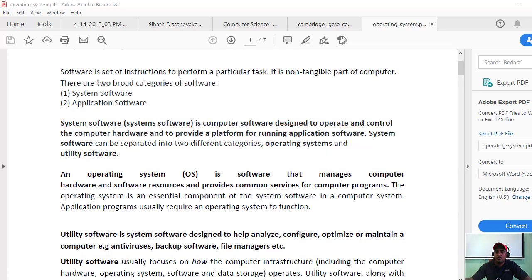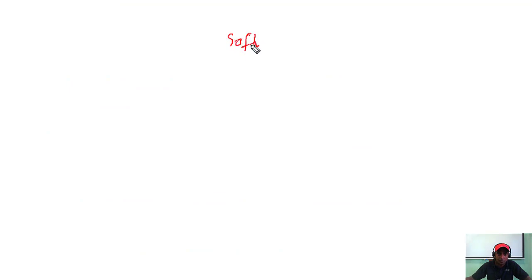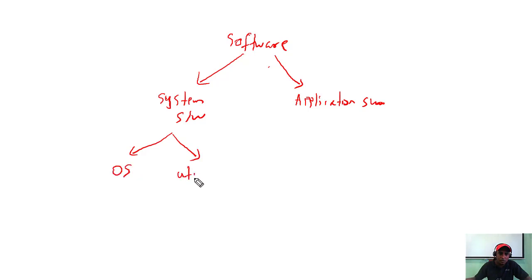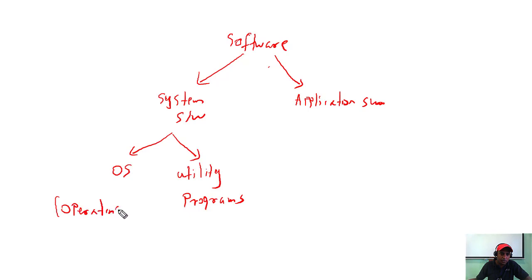The system software is also divided into two parts. Looking at the software taxonomy: Software divides into system software and application software. System software is further categorized into operating system and utility programs.